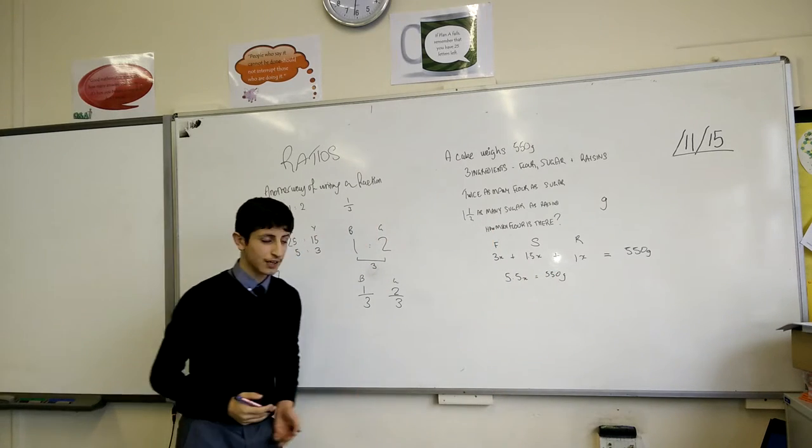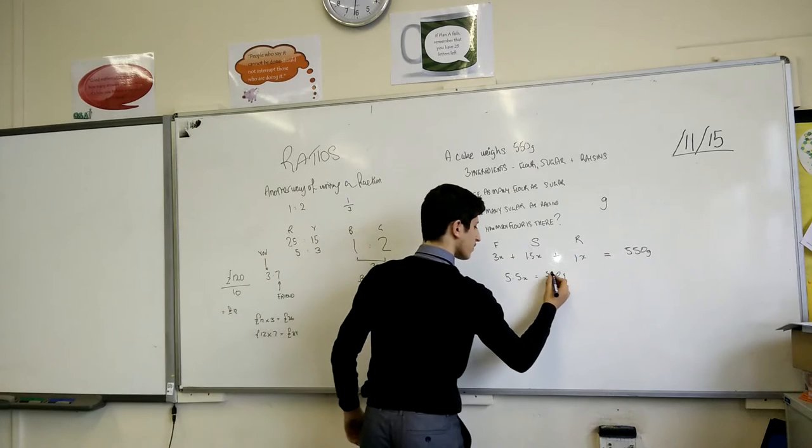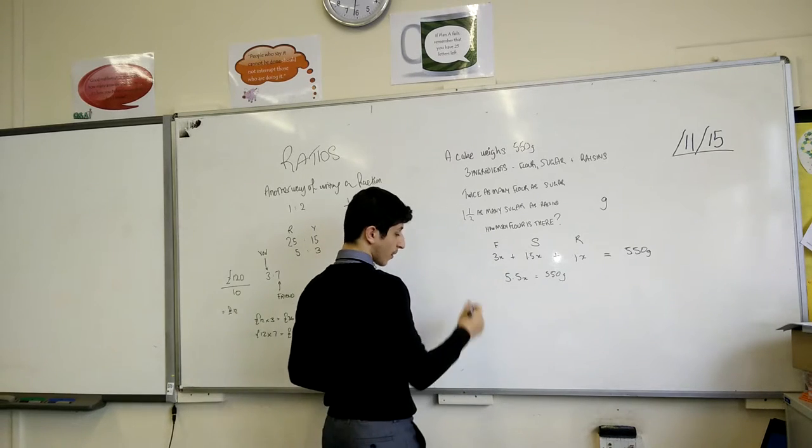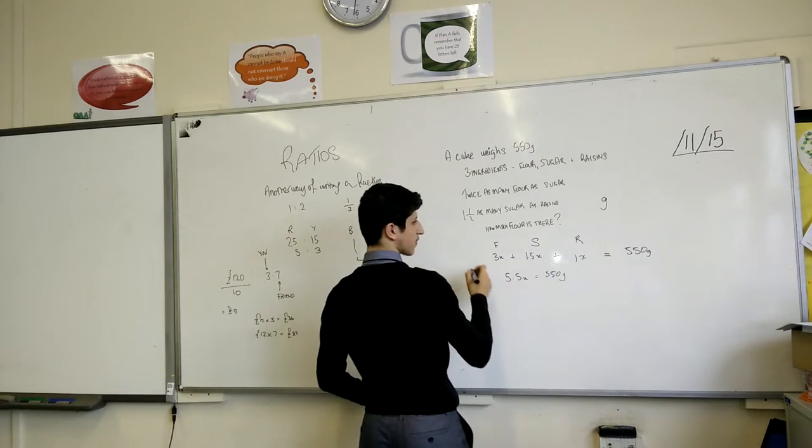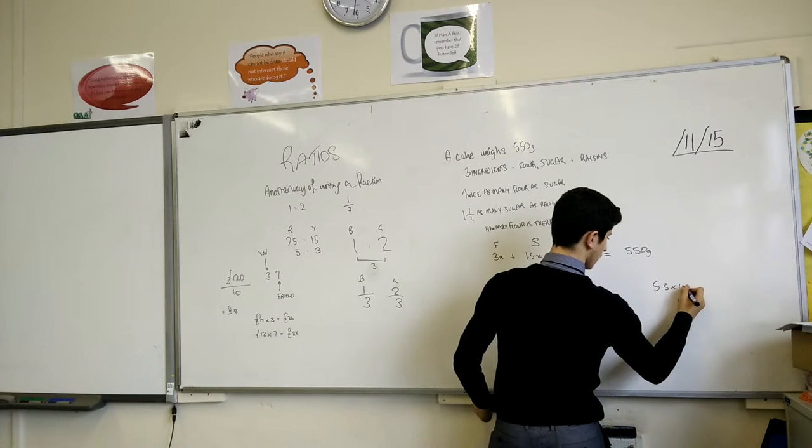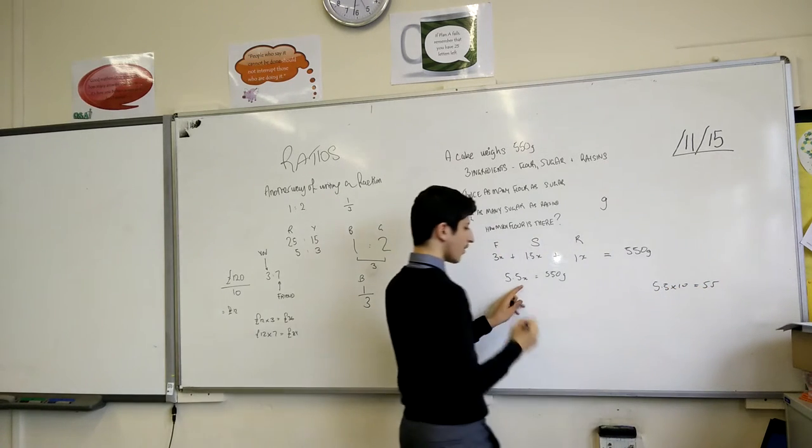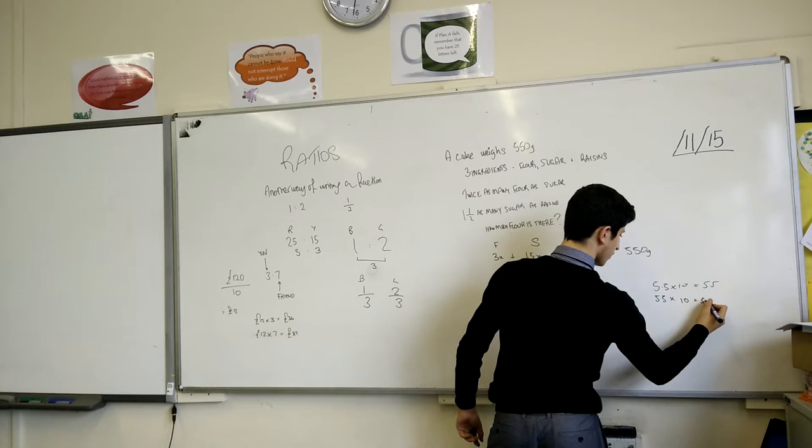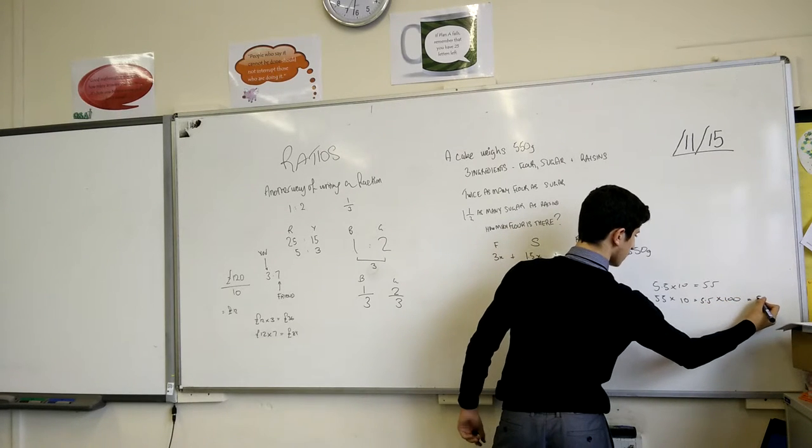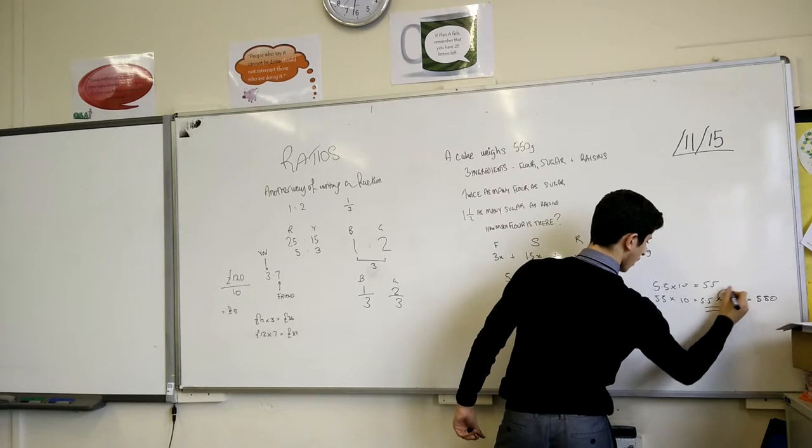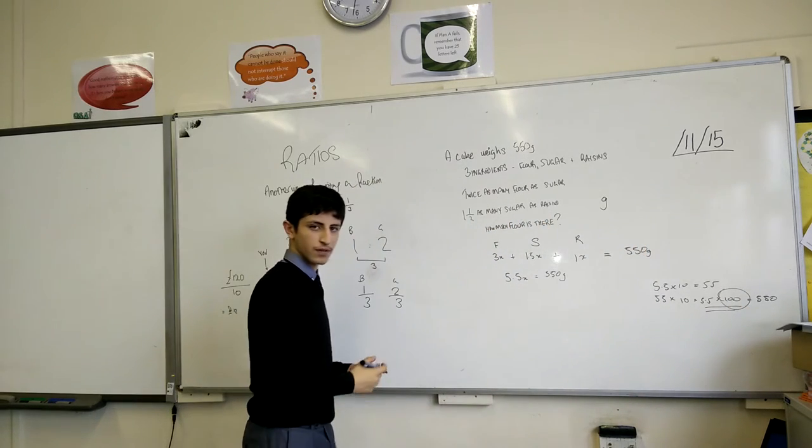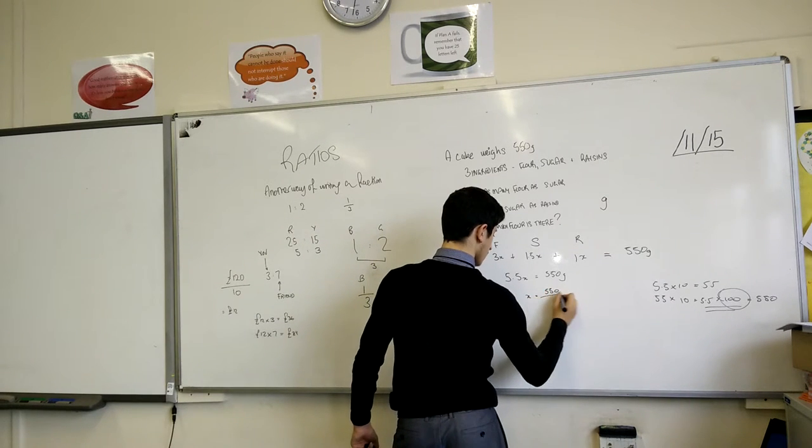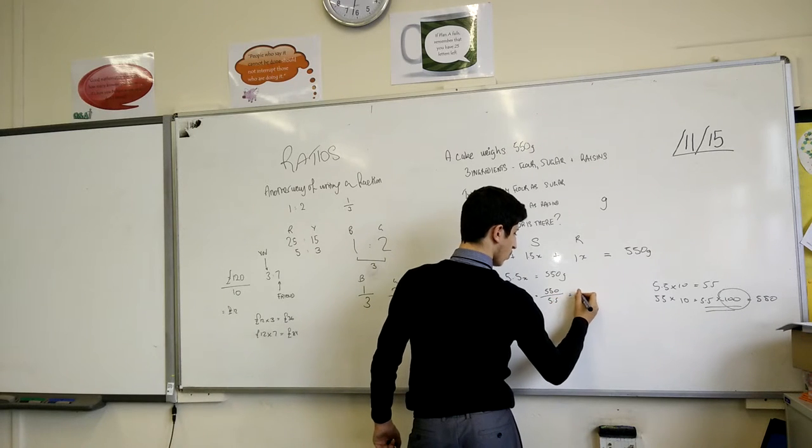This might be the non-calculator paper. So, what you can recognize actually is that 5.5, if I multiply this by 100, if I multiply by 10 first, I get to 55. Just mention it here, 5.5 times 10 is equal to 55. Again, if I multiply it again by 10, 55 times 10 is equal to 5.5 times 100, which is equal to 550. That sort of mathematics is very important. So, you know that x is going to equal 550 divided by 5.5 equal to 100 grams.